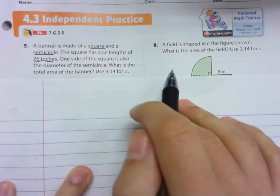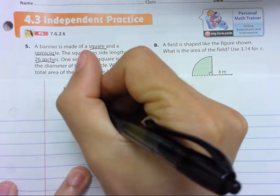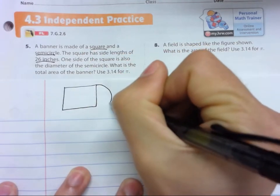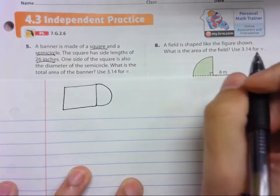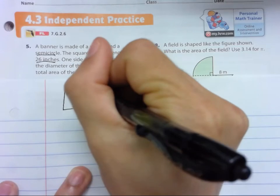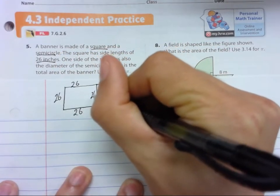Okay, so we need to draw a picture here. So let's draw this. We have a square and a semicircle. So we know that one side length is 26, this is 26, this is 26, and this is 26. What's the area?